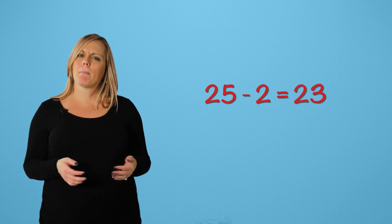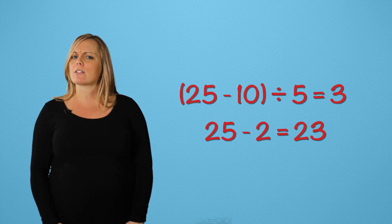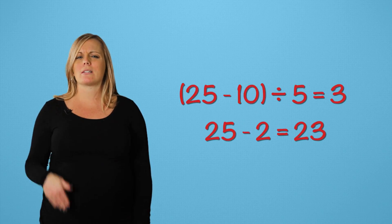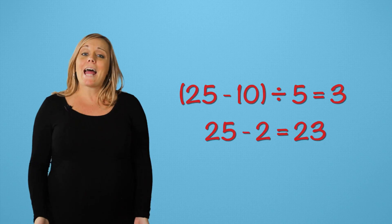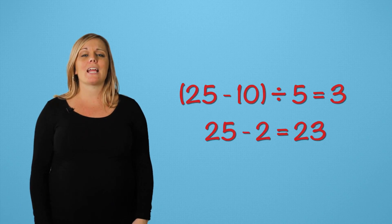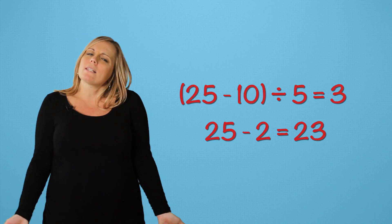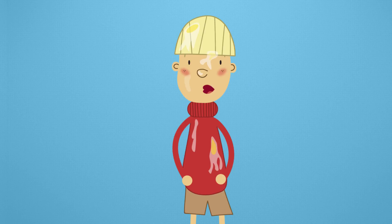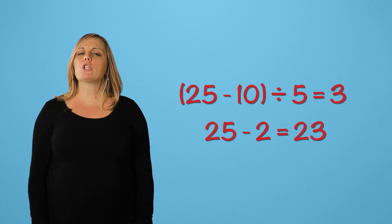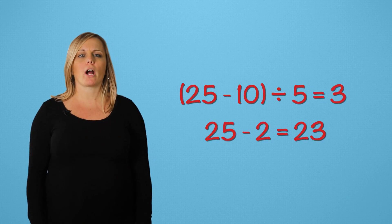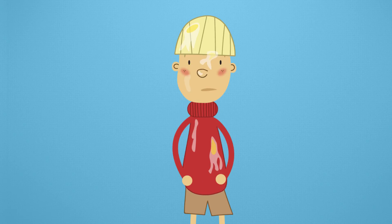But wait. Before, when we subtracted first, our final answer was 3. And now, when we divide first, it's 23. What does that tell us? It tells us that we shouldn't rush. That order is very important. That's right, Richard. And what is one way to write the order of an equation? Using parentheses. Always begin with the parentheses first.